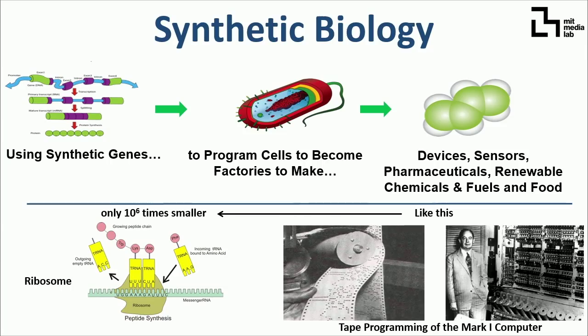So how does that work? What do I mean by programming synthetic biology? Programming actually happens at two different scales within synthetic biology. The first scale is seen in this lower left picture. This is a piece of molecular machinery that exists within all of our cells called a ribosome. Basically what it does is it can read a program.